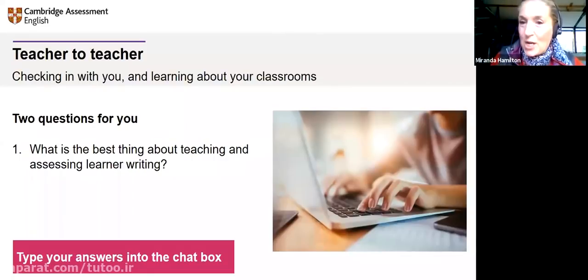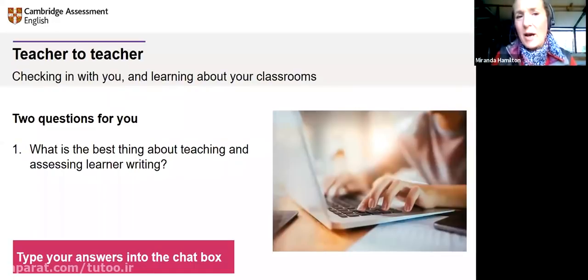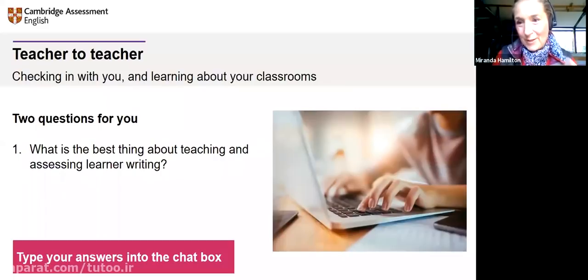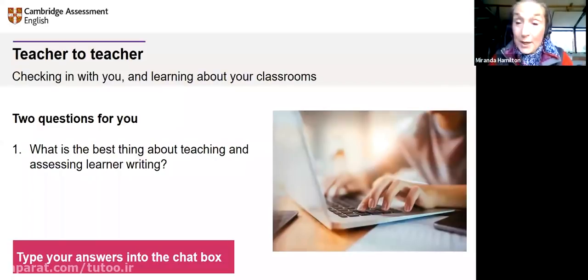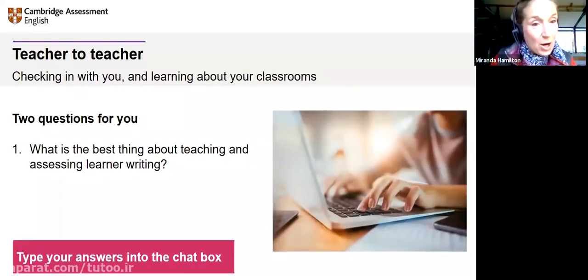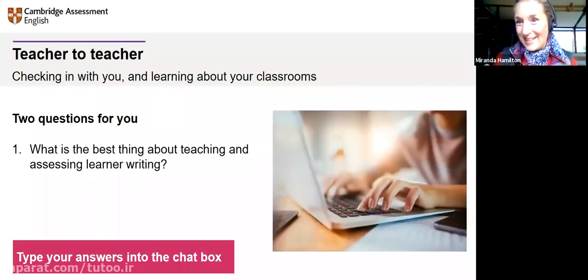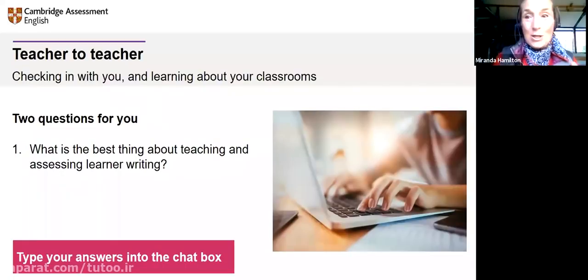Teacher to teacher — I'd like you to put your teacher's hat on and think about what you feel is the best thing about teaching and assessing writing. Individual feedback — it's one-to-one with the learner. You can find where the learner's problems are, pick out their mistakes. Understanding where they are on their learning journey. You can see progress — and isn't that lovely? Peer evaluation, rewarding, creativity. I can see that a lot of you are enthusiastic teachers of writing.